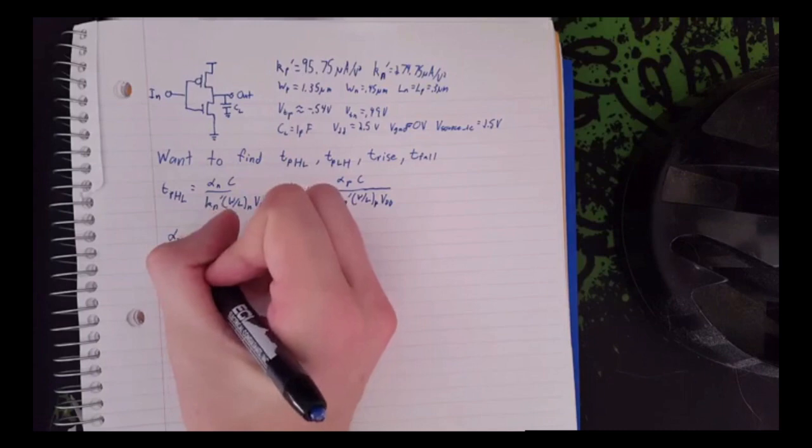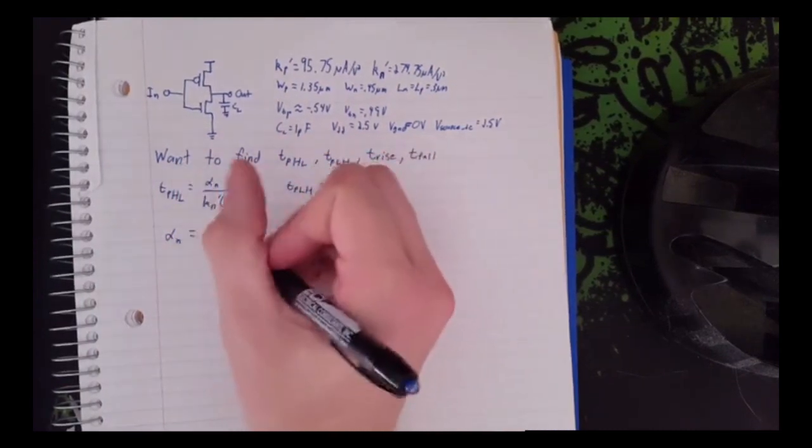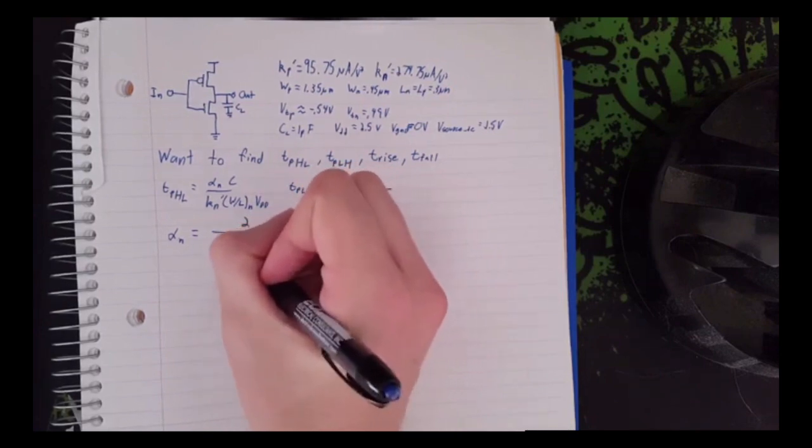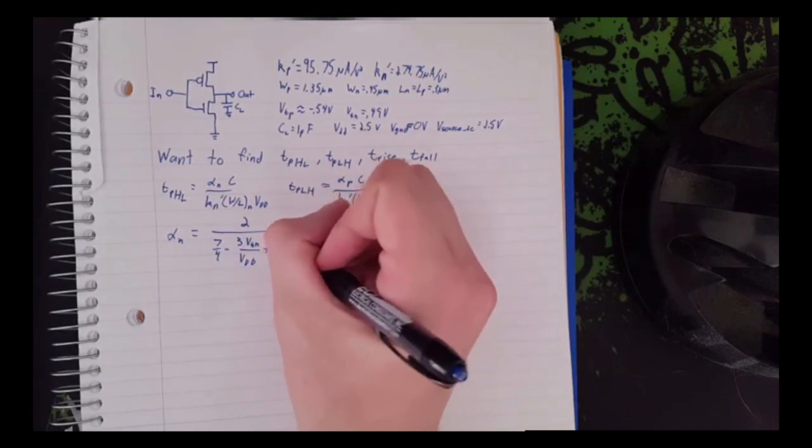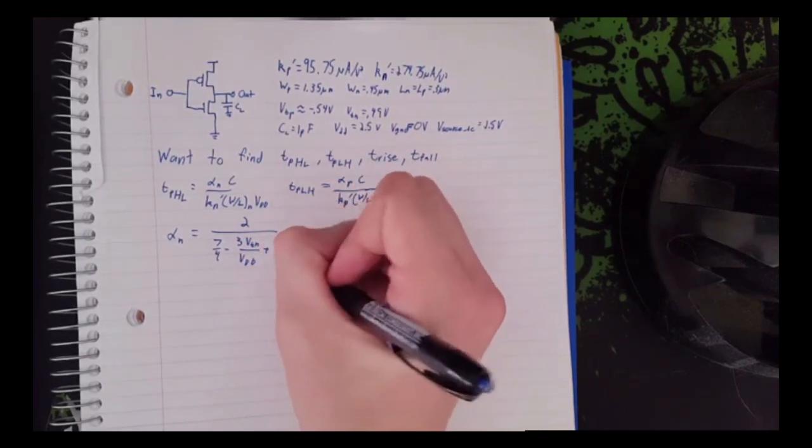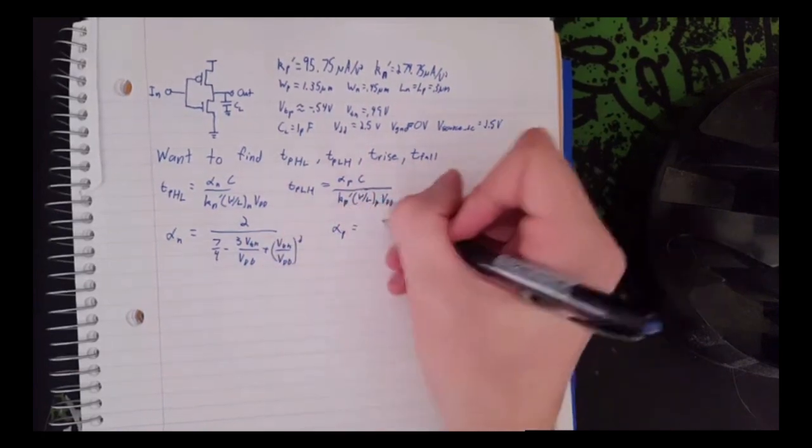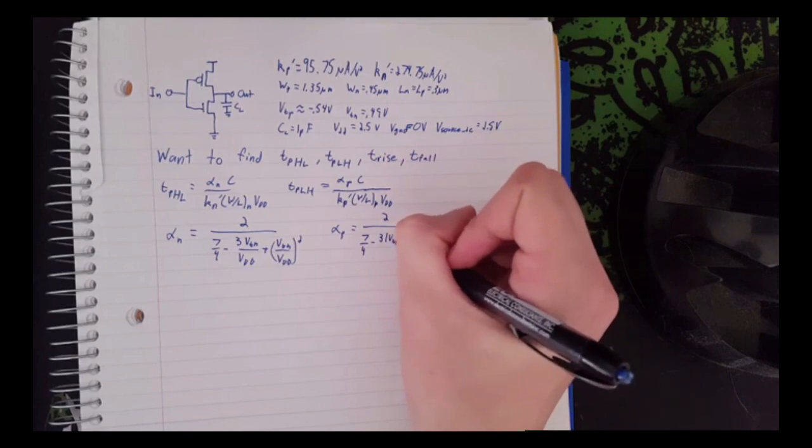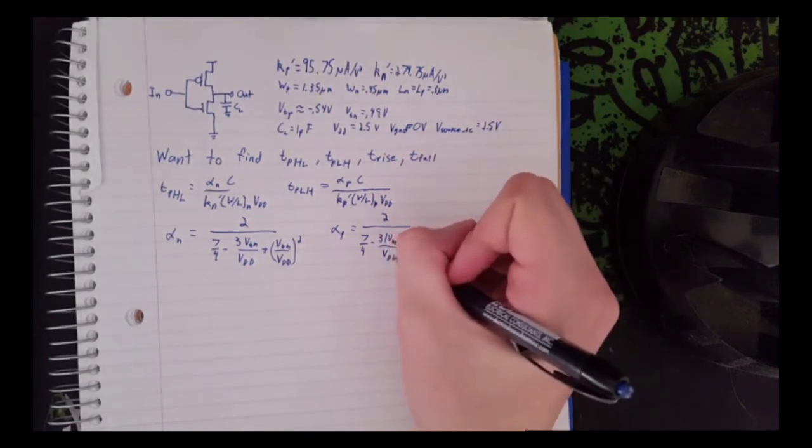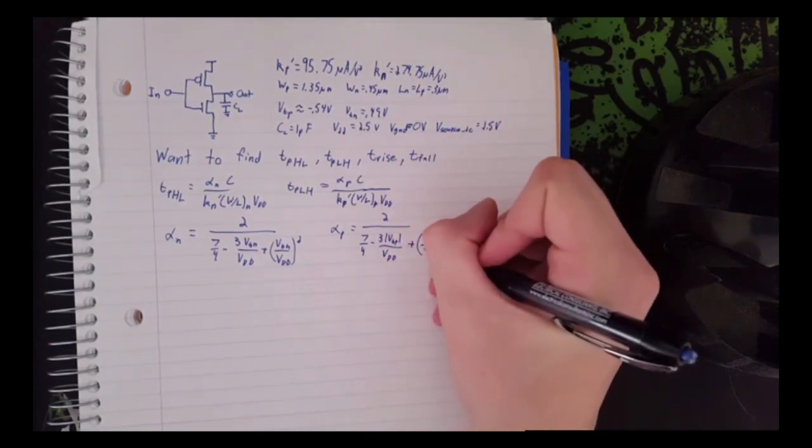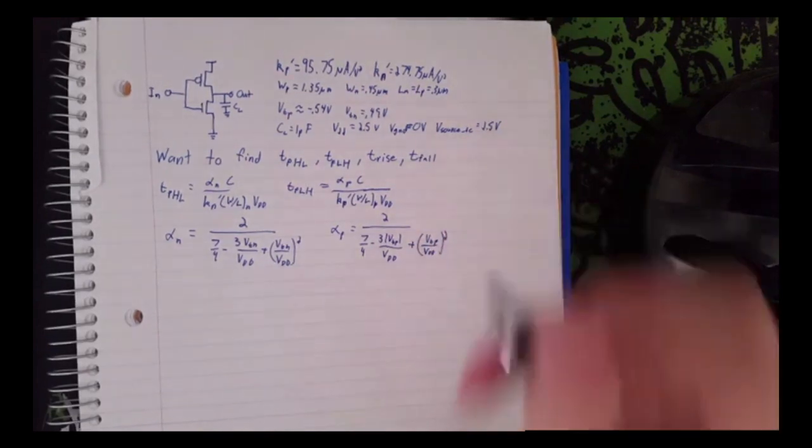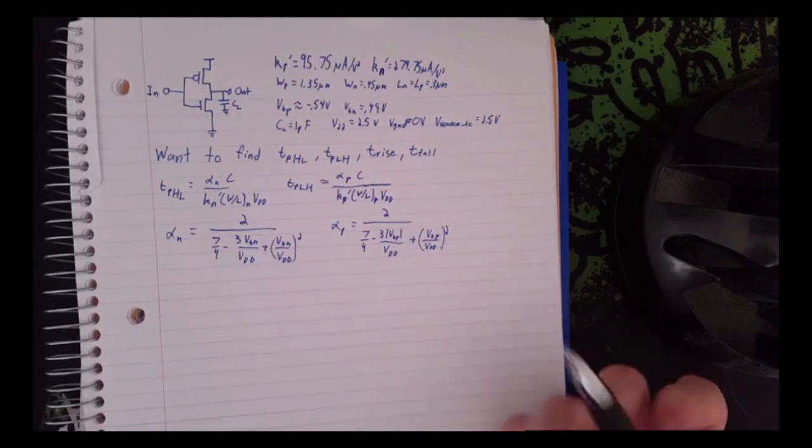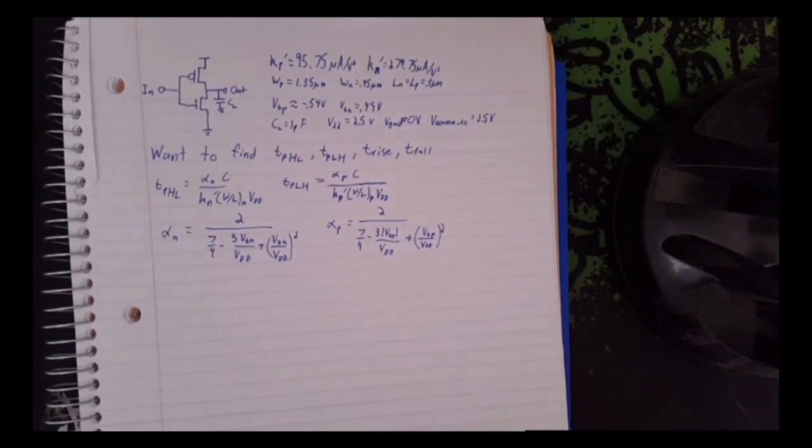So the equations for these alphas are also in the lecture slides. As you can see, they're very similar equations, but you need to make the negative V threshold for the PMOS positive. And otherwise, they're the exact same equations. So let's find this.